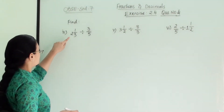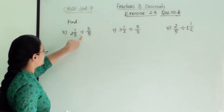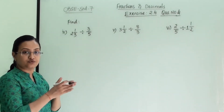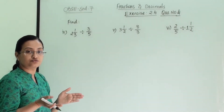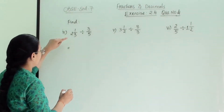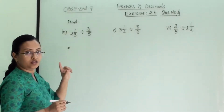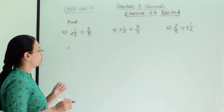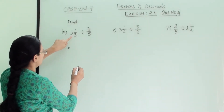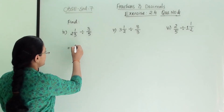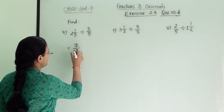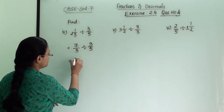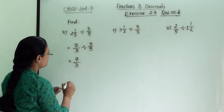The 4th numerical is 2 and 1 by 3 in division with 3 by 5. Here they have given a mixed fraction, so first we convert the mixed fraction into an improper fraction. So 2 into 3 is 6, plus 1 is 7. So we get 7 divided by 3 in division with 3 by 5. Now we follow the division method.